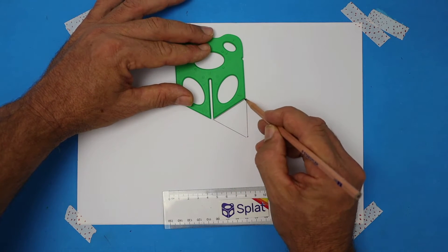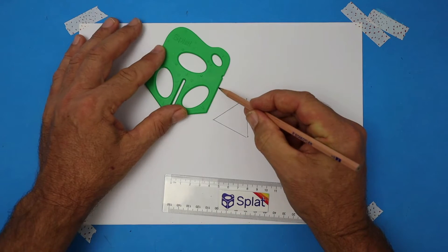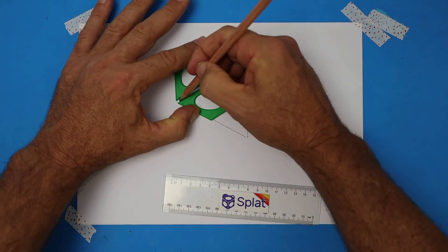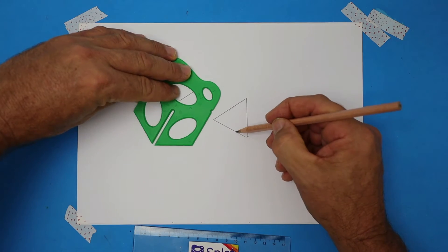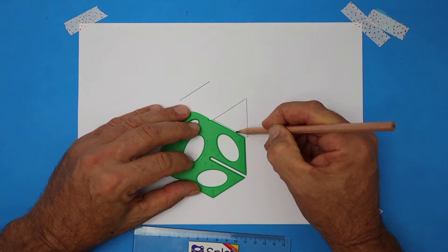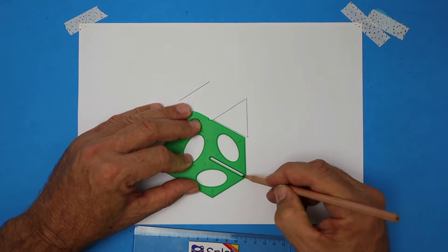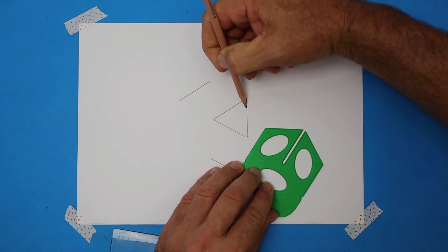Now for a larger triangle, use the edge of the splat on the triangle to give you a distance. Let's do the same thing on the second side and again over here.